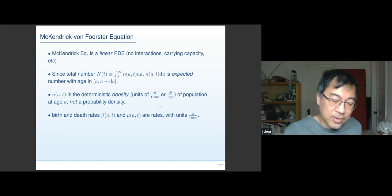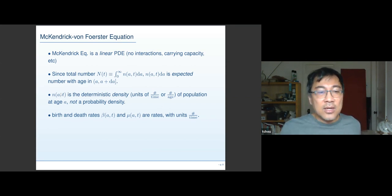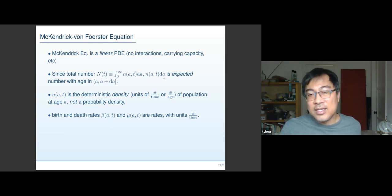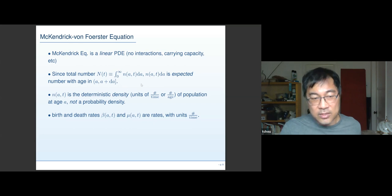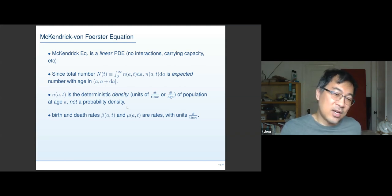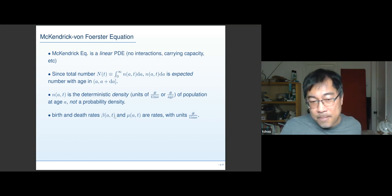This is simply a generalization of standard birth-death. N of A is really a density, so N(A,T)dA is the expected number in the population with age between A and A plus dA. It's not a probability density — it's a number density with units of number per age. The birth and death rates are still per unit time. This is the McKendrick or Von Foerster equation — I use both names to pay deference to the physics people here.